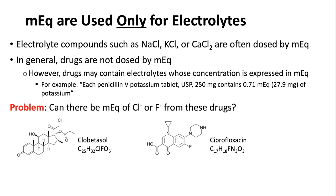There is one caveat: many drugs are salts and may be coupled with ions like hydrochloride or phosphate. You can calculate the sodium or potassium that comes along with such molecules — for example, penicillin V potassium tablets containing 250 mg of penicillin also contain 0.17 milliequivalents of potassium. You might need to quantify that electrolyte contribution, but the drug itself is dosed by weight of the parent compound.